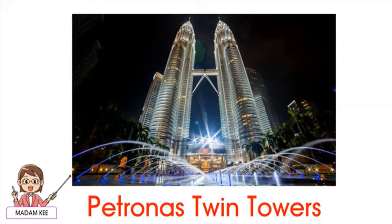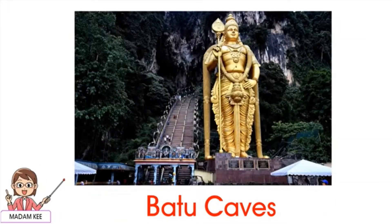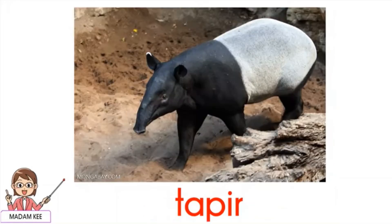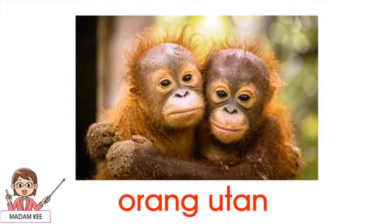Look at this. This is the famous Petronas Twin Towers in Kuala Lumpur. And this is Batu Caves — you can take a photo here. Look at this lovely animal; it is a tapir.